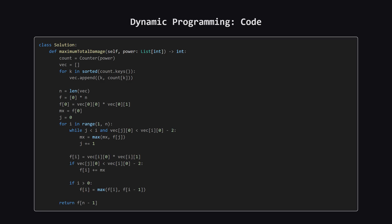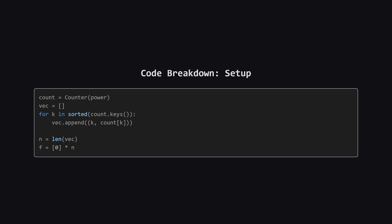Here's the full Python code for this approach. First up is the setup. We use a Counter, which is a really handy tool in Python, to quickly count the occurrences of each damage value. So if we have three spells of damage 6, the Counter will map 6 to 3. Then we convert this into a sorted list of pairs, where each pair contains the damage value and its count. This gives us an ordered list to work through. Finally, we create our dynamic programming array, which we'll call F, to store the maximum damage achievable at each step.